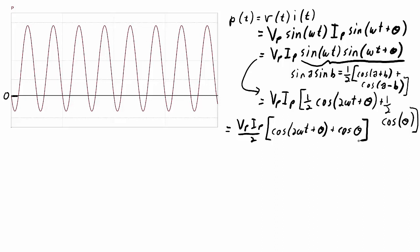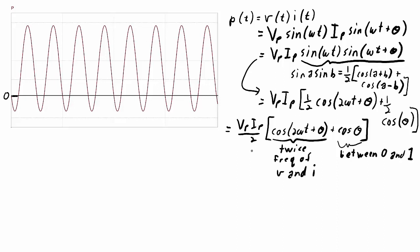Grouping all the constants, we get Vp·Ip/2 times [cos(2ωt + θ) + cos(θ)]. We can see two elements: one oscillating term at twice the frequency of the voltage and current, and then cos(θ), which is a constant — the phase difference between voltage and current — with a value between 0 and 1. These components — magnitude, oscillating frequency, and offset — create the power function, offset above zero.